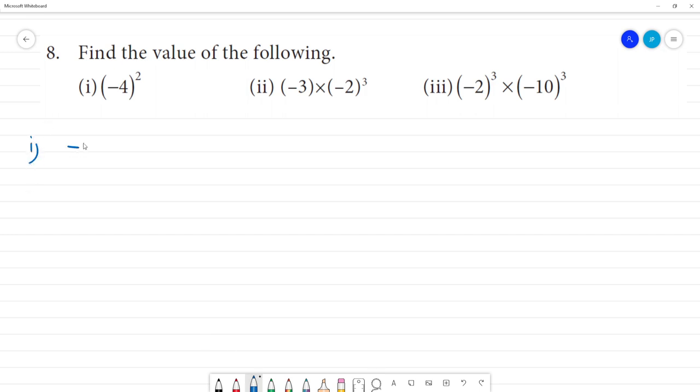So, minus 4 whole square. When minus is in square, what does it mean? It means minus 4 multiplied by minus 4. That is equal to minus into minus is plus, 4 multiplied by 4 is 16. So the answer is 16.